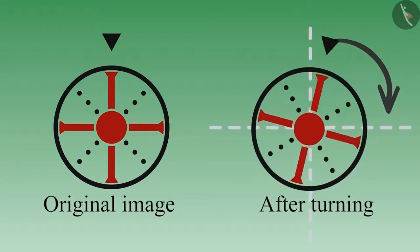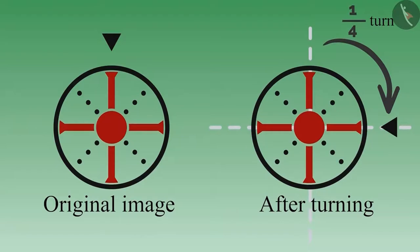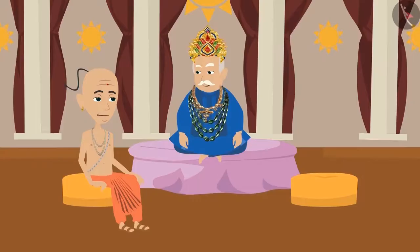Now let's look at it after turning it by one-fourth. It looks the same as before. This shield is the answer to your question. This is called one-fourth rotational symmetry.